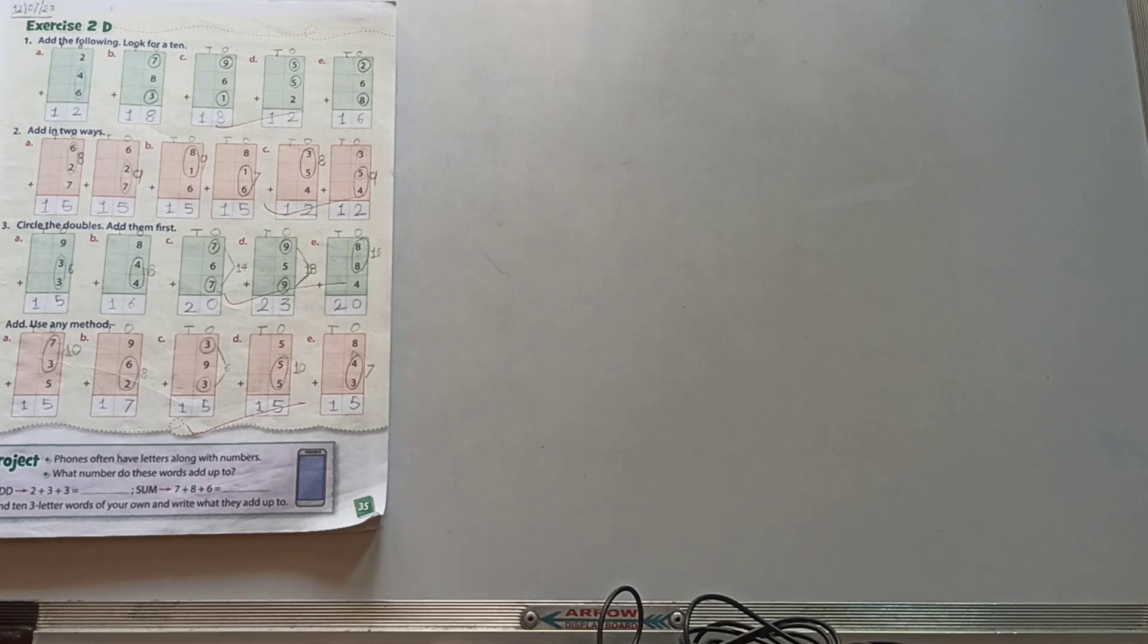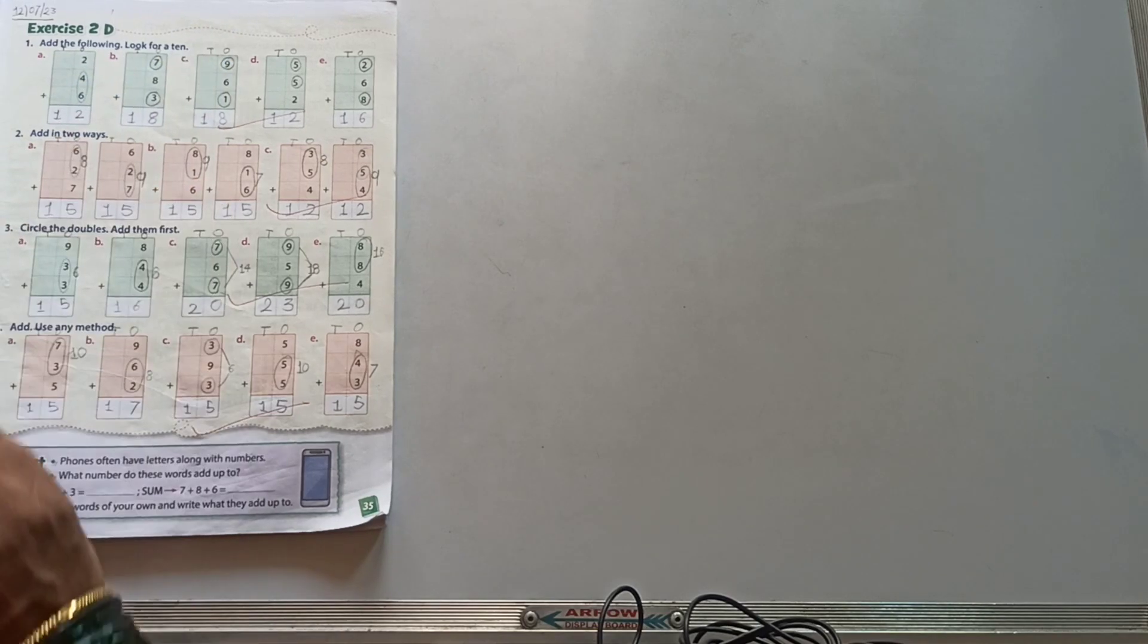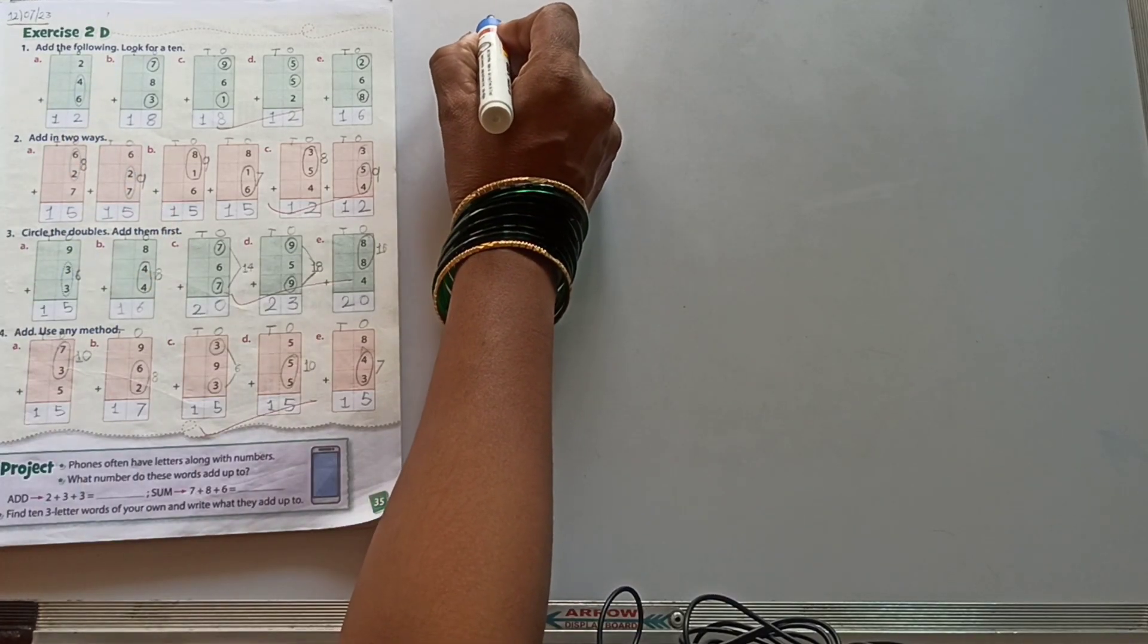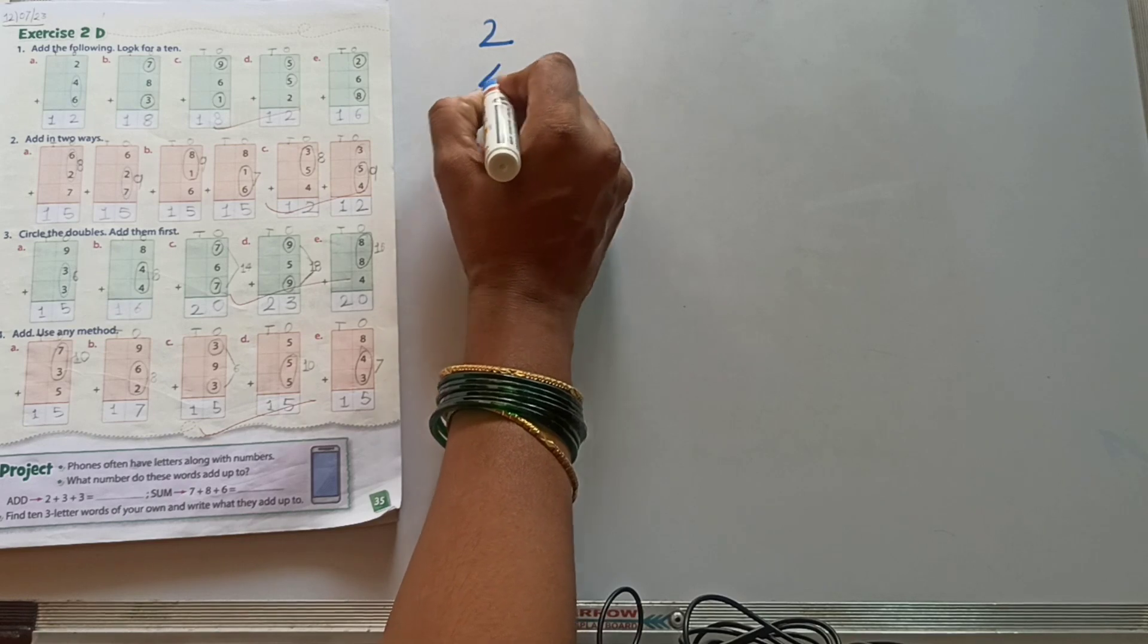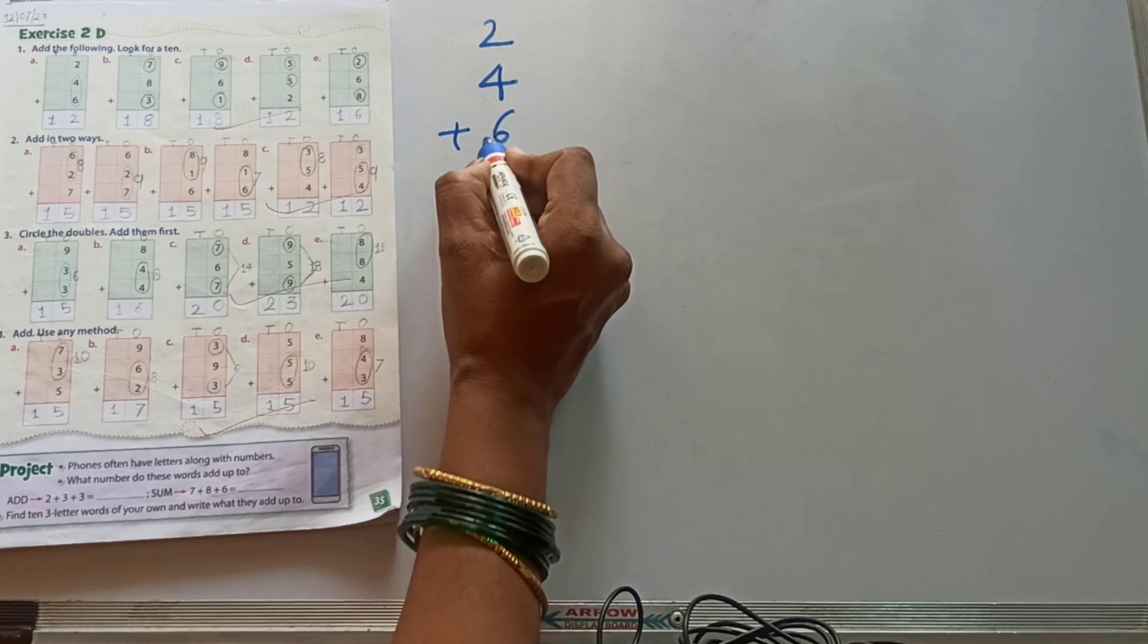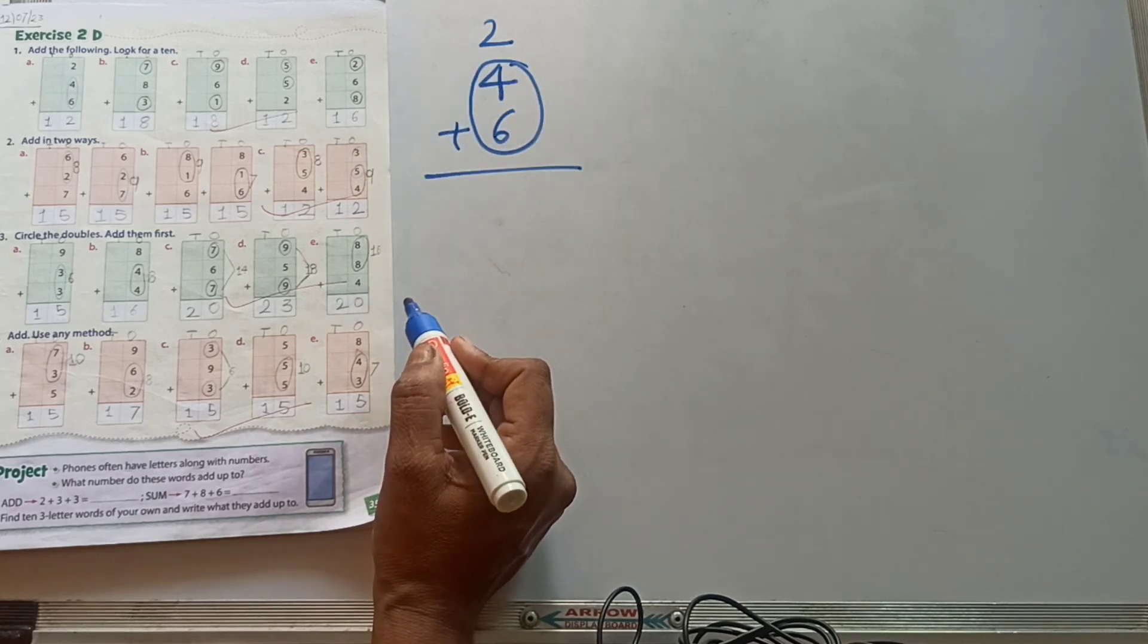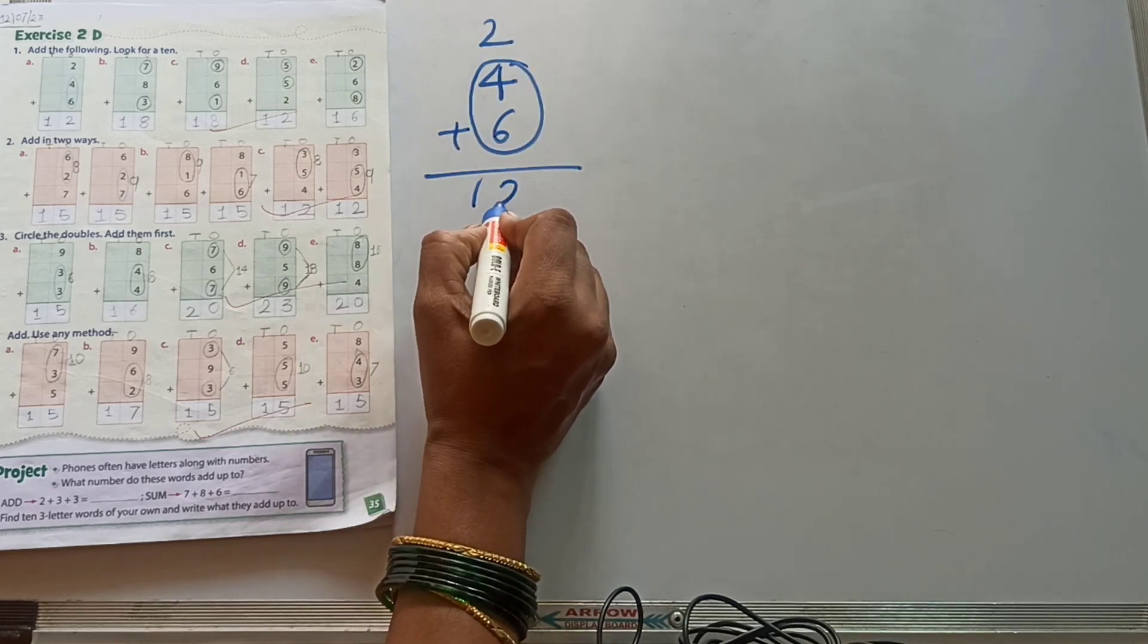Kids, now we solve exercise second D. First one, add the following, look for 10. See, first one our sum. A1: 2 plus 4 plus 6. This one, 4 plus 6, 10. 10 plus 2, 12. Write down here, 12.